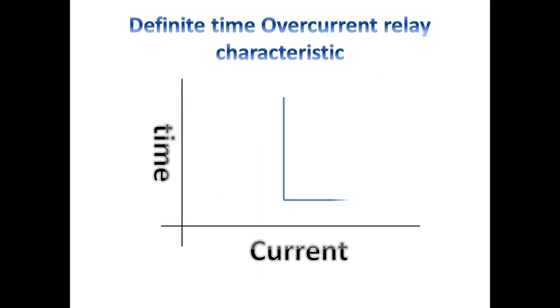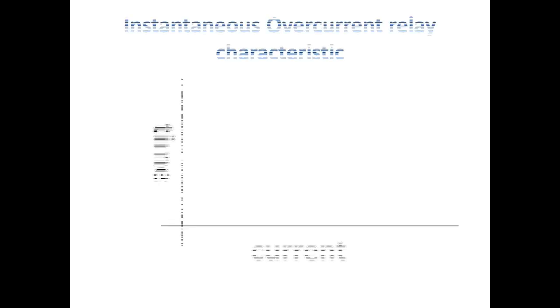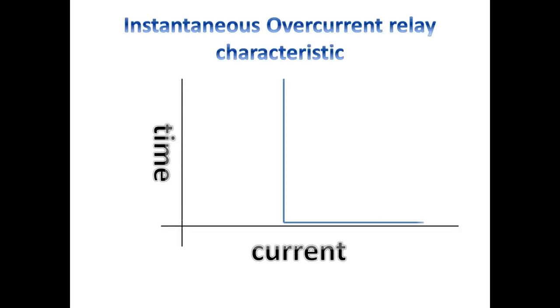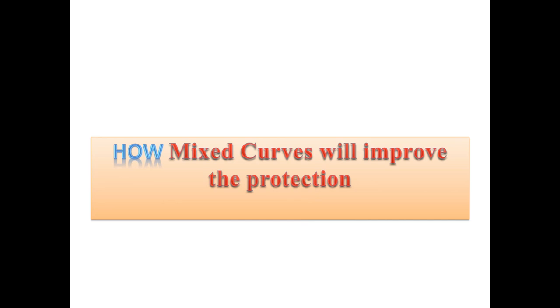This is the characteristics of the definite time over current relay. Once the actual current touches the ISET value, the relay will wait the set time and then trip. Looking at the instantaneous characteristics curve — once the actual current reaches the ISET value, it will start to give a trip command within milliseconds.